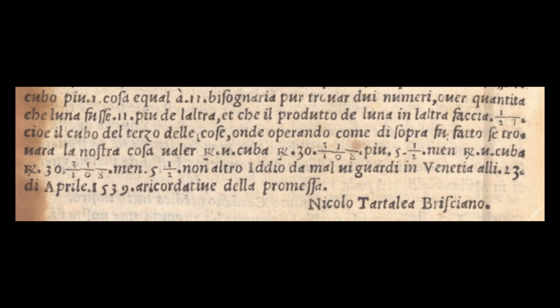One cube plus one thing is equal to eleven. It would be necessary to find two numbers or quantities such that one is eleven more than the other, and that the product of the one by the other should be one, that is the cube of the third of things. Once operating above it will be found that our thing is... And here we do get a little bit of a symbol. This R with a slash in it, kind of like a prescription symbol. R U cube R 30 31 plus 5 1 minus R U cube R 30 31 minus 5 1 and not other.